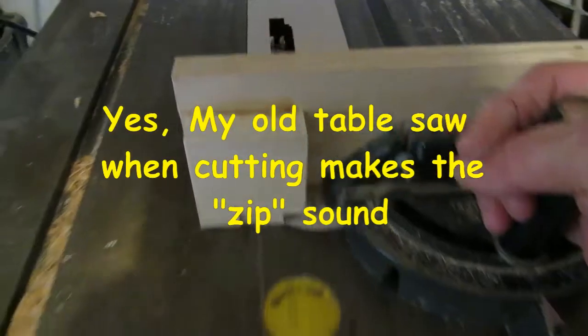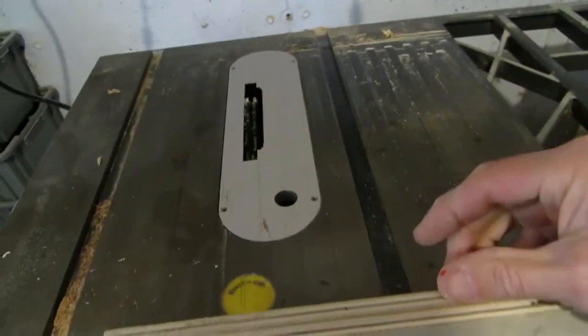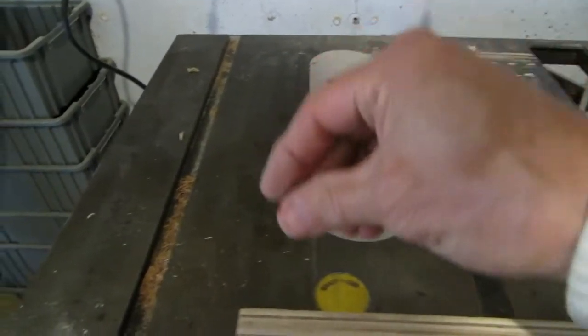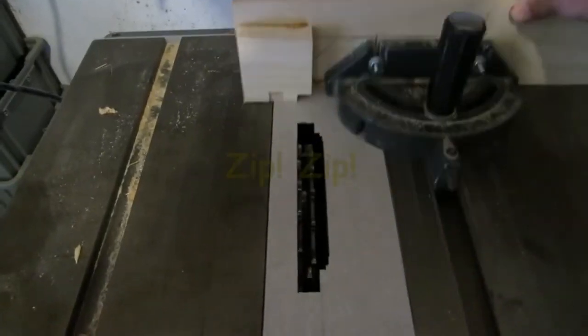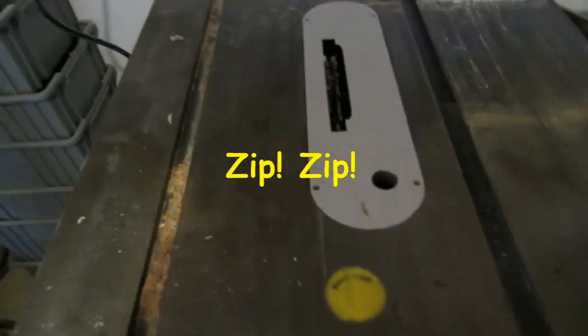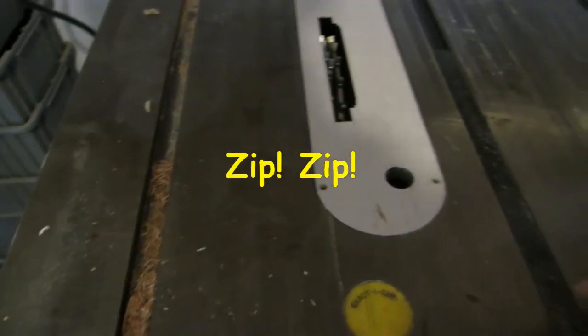When I bring it back out, I lift up on the board, bring it over one piece, that dado I just cut sits right on there and then cut the next one. The width of the board will determine how many dados I put in one piece. Just slide it in, come back, it's very safe, works really well.